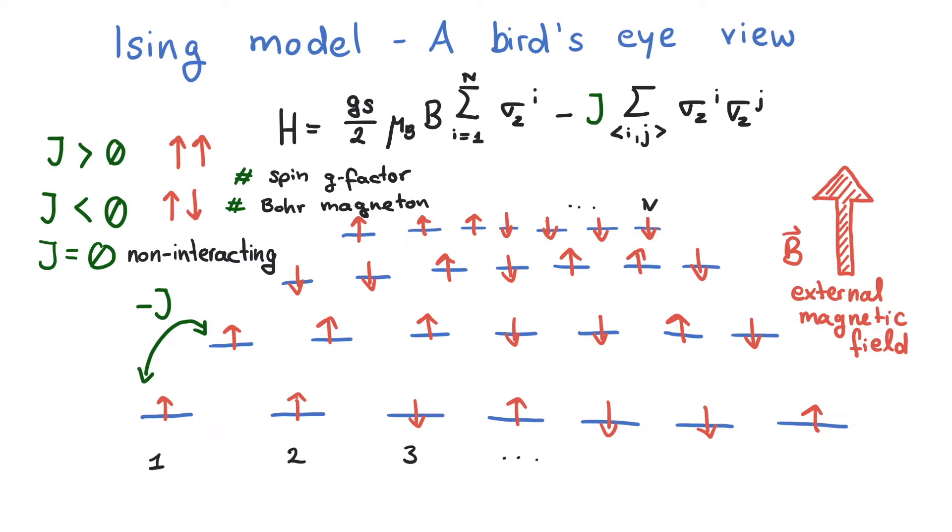If you want to find out more, they are called spin g-factor and Bohr magneton. Note that the Hilbert space is spanned by states of all possible combinations of spins up and down at each site. Therefore, the Pauli matrix sigma_z^i reads up up minus down down at site i.